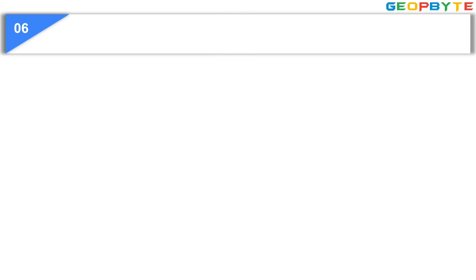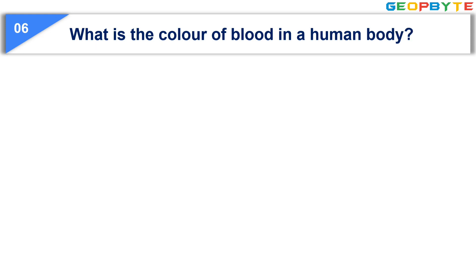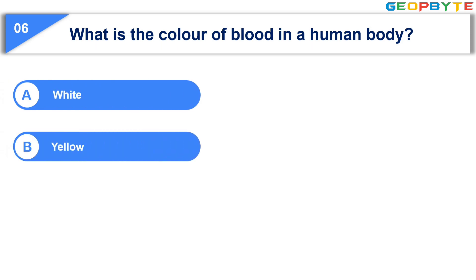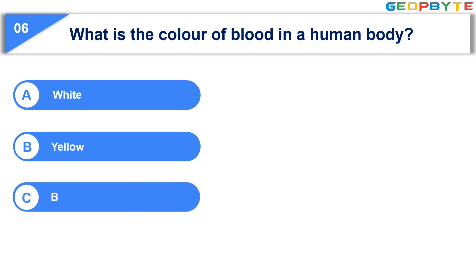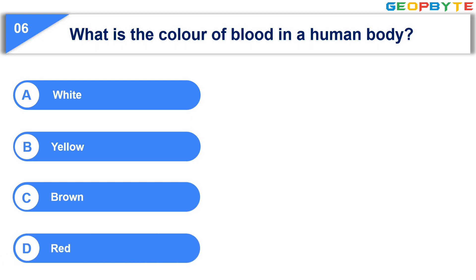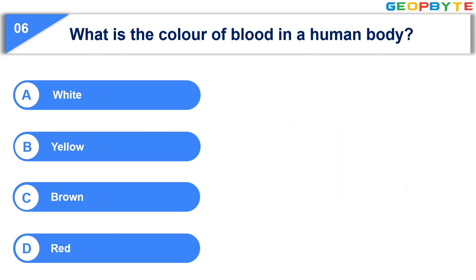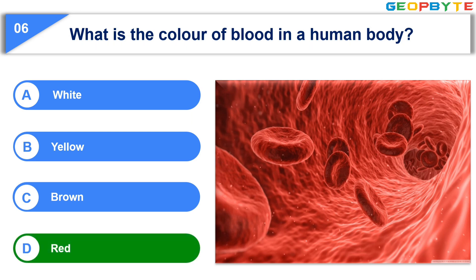The sixth question is: What is the color of blood in a human body? Option A, white. Option B, yellow. Option C, brown. Option D, red. Your time starts now. Your time is up and the correct answer is Option D, red.